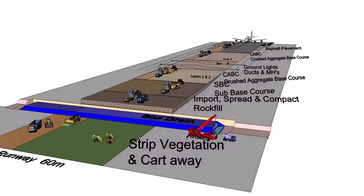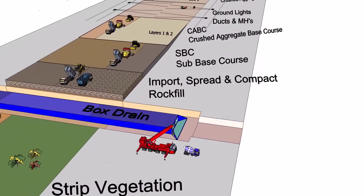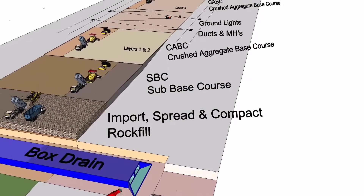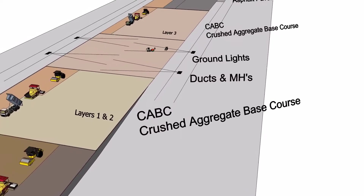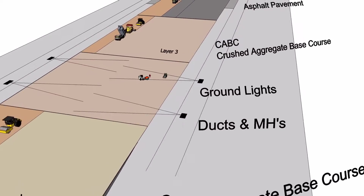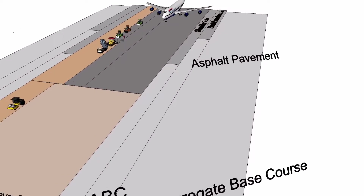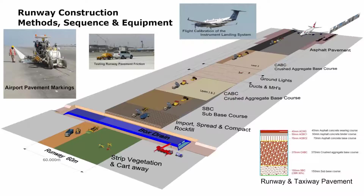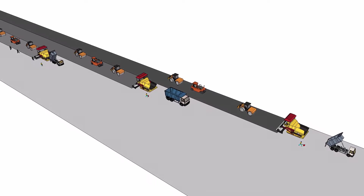Runway Construction: Asphalt Paving and Ground Lights. This 3D animation shows the construction sequence, methods and equipment for airfield asphalt pavement.